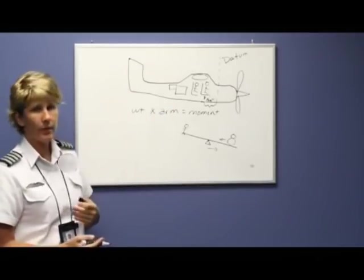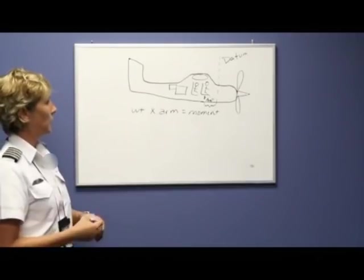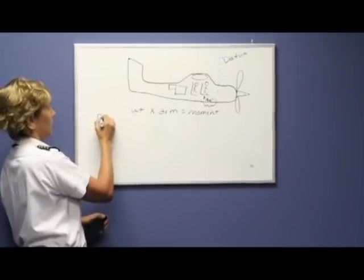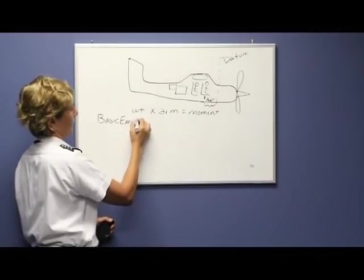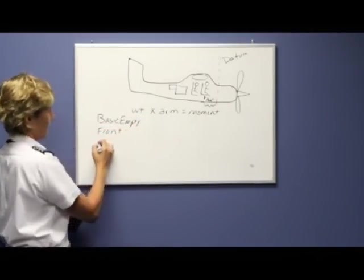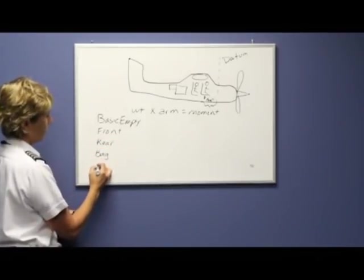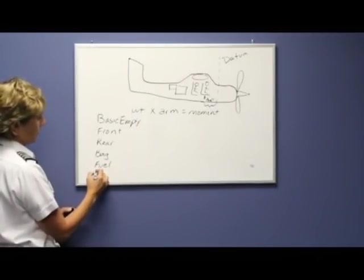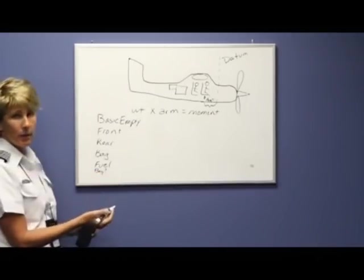To continue calculating our center of gravity, we have to consider the basic empty weight, our front seat passengers, our rear passengers, our baggage, and our fuel. It's questionable if there is a baggage compartment two—it depends on what airplane you're in. Also, sometimes the oil may or may not be considered in the basic empty weight.